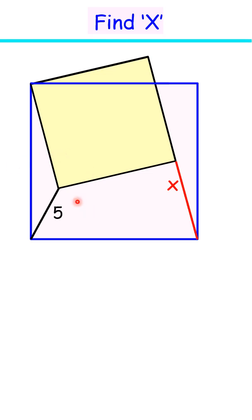This question given are two squares with distance between the vertex as 5 centimeter. With this limited data, can you find the value of x? Let's check the solution.